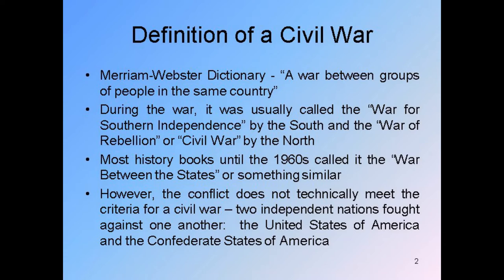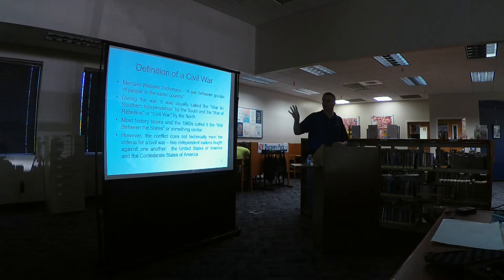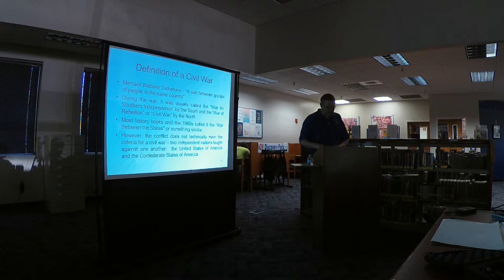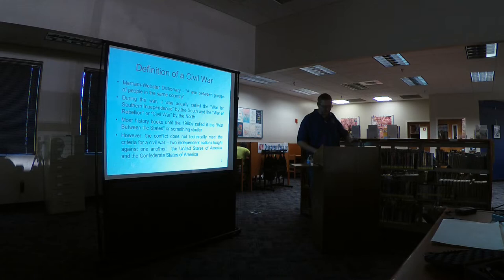This war that we call the American Civil War really was not that. It was a group of people who broke off, seceded from the United States — which was technically not illegal at that time — and formed their own country. Because history is written through the eyes of the victor, the Union won and thought it was a civil war. During that war it was called things like the War of Southern Independence, War of Rebellion, War Between the States, War of Separation, or the Second American Revolution.